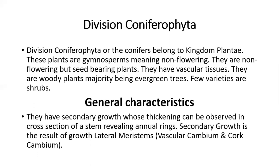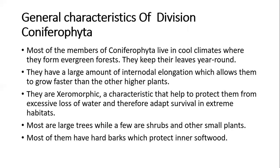The general characteristics of the members found in this division: the first one is that they have secondary growth, whose thickening can be observed in a cross-section of a stem by reviewing annual rings. The secondary growth is the result of the growth of lateral meristems in stems, which are the vascular cambium and the cork cambium.